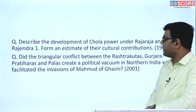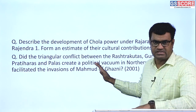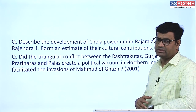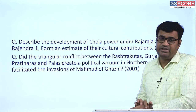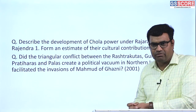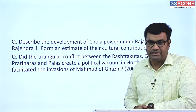Another previous year question asked: 'Did the triangular conflict between the Rashtrakutas, Gurjara-Pratiharas, and Palas create a political vacuum in northern India which facilitated the invasions of Mahmud of Ghazni?' The continuous conflict among all three dynasties exhausted their energy and brought them to an end, creating a kind of political vacuum in northern India. This largely facilitated Muhammad Ghuri's entry into the northern territory, and it cannot be denied that it facilitated the establishment of a sultanate with its center of power at Delhi.